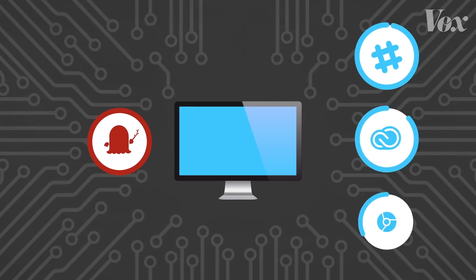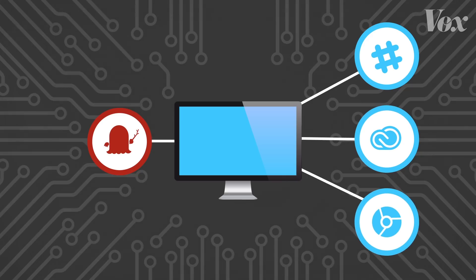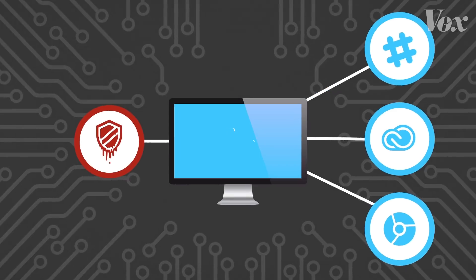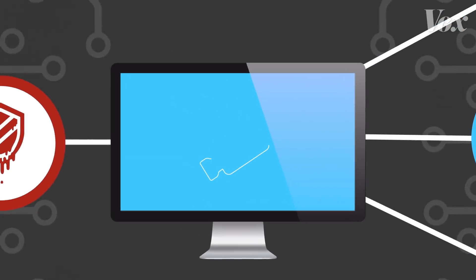Spectre allows a malicious program or code to trick other applications, using a shared processor, into loading sensitive information that it would normally keep secure and separate between the programs. Meltdown works slightly differently. Instead of tricking one application into revealing sensitive information to another, it exploits the relationship between the application and the computer's memory. But in the end, the results are the same — compromised data.